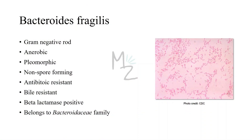Bacteroides Fragilis is a gram-negative rod. It's an anaerobic bacterium. It is pleomorphic — pleo means many and morph means shapes — so does this bacterium have many shapes? Yes, it varies from rod to various shapes. It is not responsible for forming spores. It is antibiotic resistant — Bacteroides Fragilis is resistant to penicillin, first-generation cephalosporins, and aminoglycosides, making it the most antibiotic resistant anaerobic bacterium.